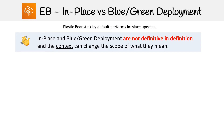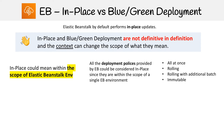Elastic Beanstalk by default performs in-place updates. All the deployment policies we've been looking at — all at once, rolling, rolling with additional batch, and immutable — have all been considered in-place. But let's change the context to see how that affects the scope. When the Elastic Beanstalk environment is our scope, all those policies are considered in-place deployment methodologies.